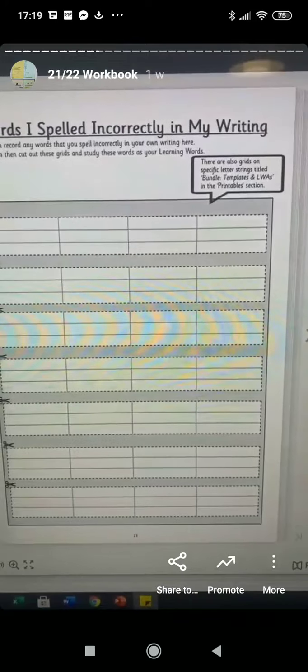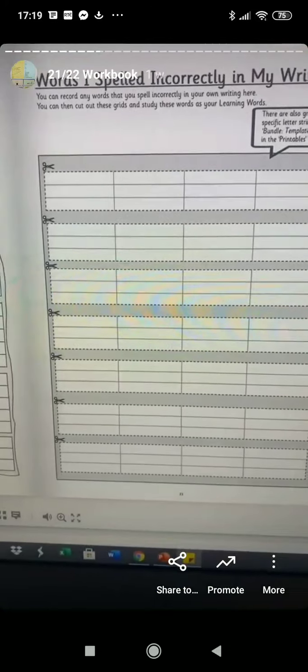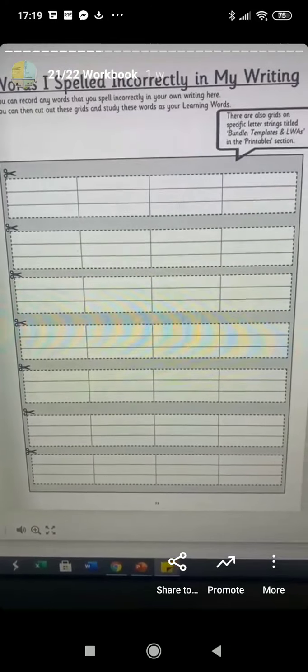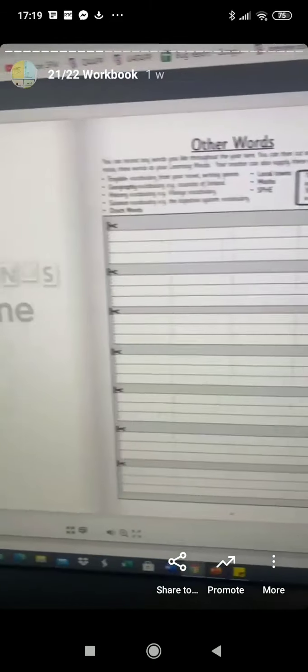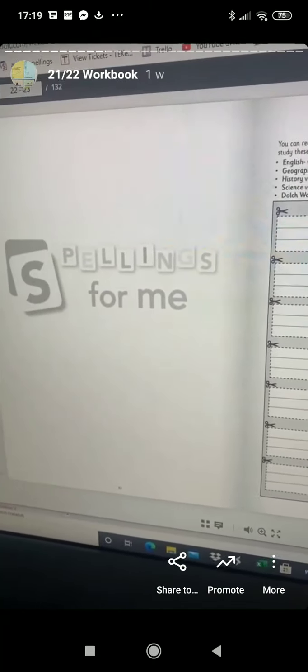And then they now have a place to record them and they can then use these grids for their activities and for their spelling strategies whenever they need to use them. So they can actually cut them directly out of this. So we leave that page blank.